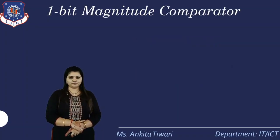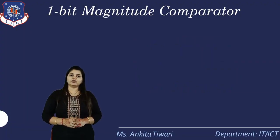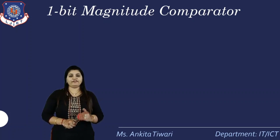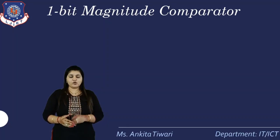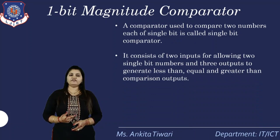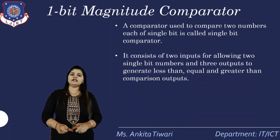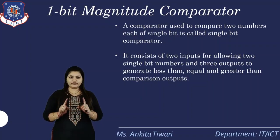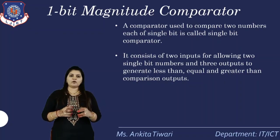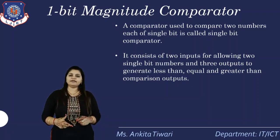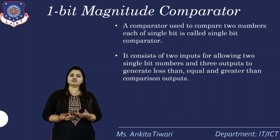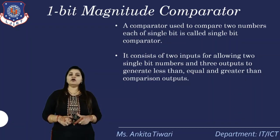We will talk about the one-bit comparator. Magnitude means the value of a variable. We compare the value of one variable with another to determine which comparison is possible. A comparator used to compare two numbers, each of a single bit, is called a single-bit comparator. It consists of two single-bit inputs and three outputs to generate less than, greater than, or equal to comparison outputs.